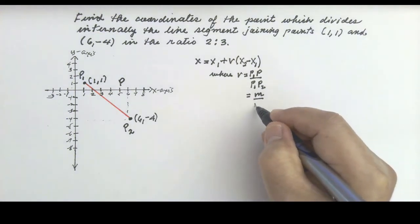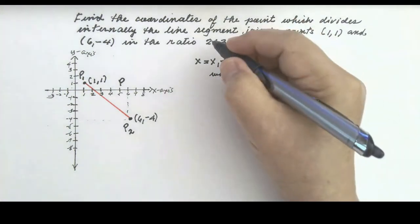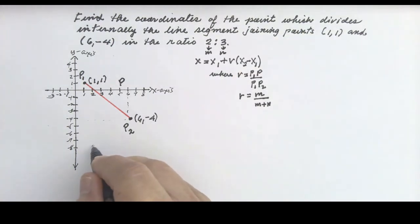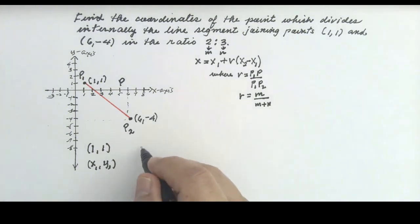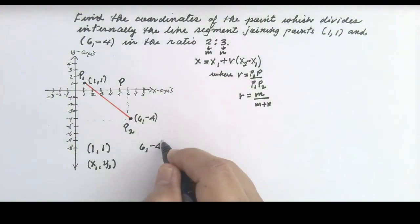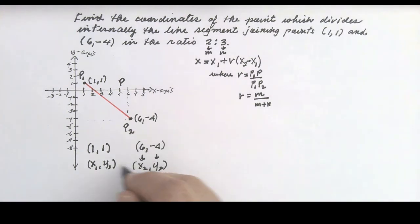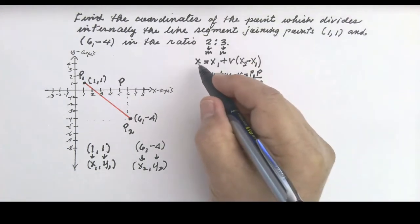Here R is equal to M over M plus N, where M and N come from the ratio. So the first point is (1, 1) — this is our first point with coordinates x₁ and y₁. The second point is (6, -4), represented by x₂ and y₂. This is the formula to solve for the x-coordinate of P.